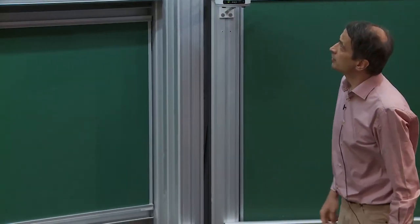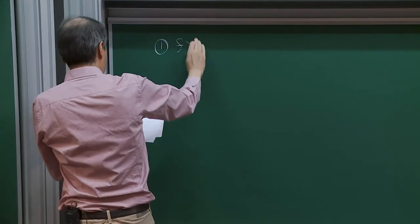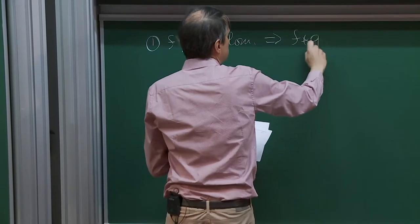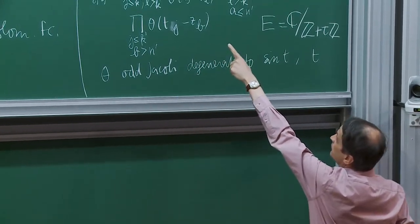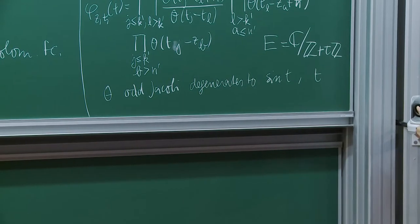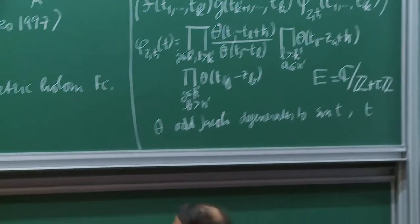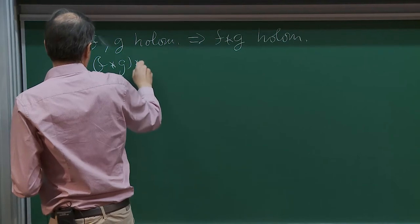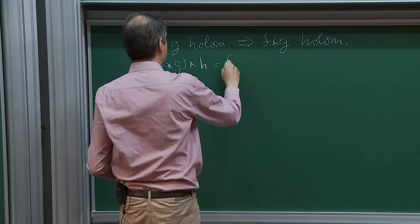What are the properties of this function? First, if f and g are holomorphic, then f ⋆ g is also holomorphic — this phi function has zeros on the lattice, but symmetrizing cancels those denominators. You also have associativity whenever defined: with three sets of variables the obvious product is associative.